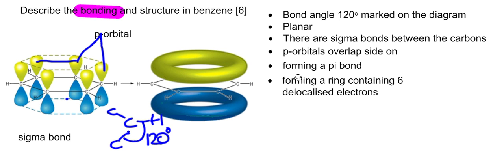There you have describing the bonding and structure in benzene. The format is the same each time. You need to pick out these six points: the bond angle 120 degrees marked on the diagram; the shape is planar; there are sigma bonds between the carbons and between the carbons and hydrogens; the p-orbitals overlap side-on; and it's key to draw a diagram forming a pi bond, which is a ring containing six delocalized electrons above and below the ring.